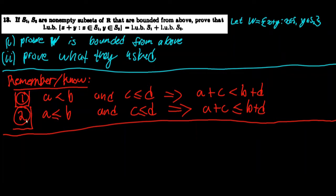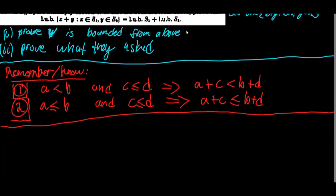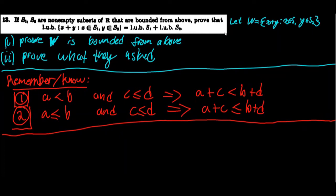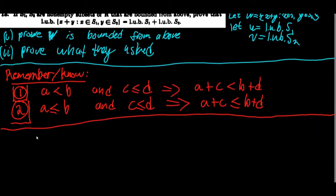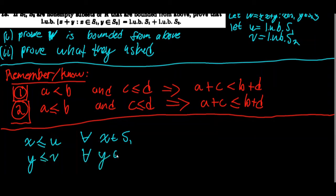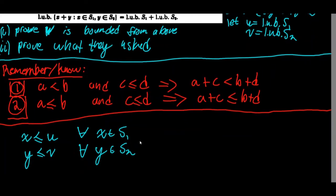We're now primed to prove that W is bounded from above. For shorthand, let u equal the least upper bound of s1 and v equal the least upper bound of s2. Since u is the least upper bound of s1, for all x in s1, x ≤ u. Similarly, y ≤ v for all y in s2, since v is the least upper bound of s2.